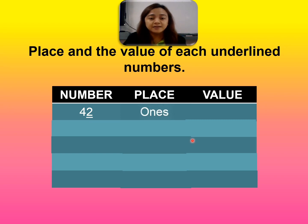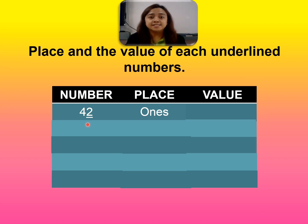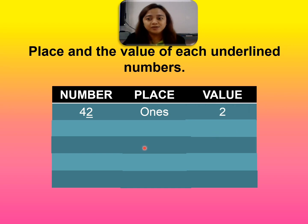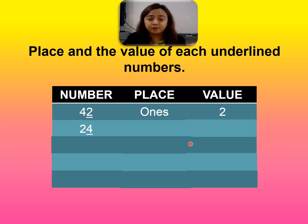The underlined number is two. Let's see what is the place. The place is ones. On the left part it's the tens, on the right part it's the ones. So the underlined number two is ones, and the value is two. Next: twenty-four. The underlined number is four. So the place is ones, and the value is four.